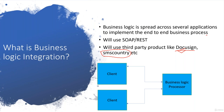So whenever I want to do this business logic integration, the business logic is spread across several applications to implement end-to-end functionality. You may have third-party applications or products like DocuSign or SMS Country with logic hosted on another platform. To access and implement that business logic, we integrate the system. There is something called SOAP and REST which I'll talk about in detail — we'll use those for business logic integration.